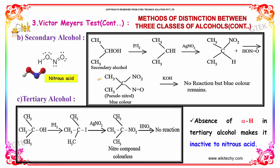For secondary alcohols, if a secondary alcohol is reacted with iodine we obtain CH3CH2CHI. On further addition of AgNO2 we obtain CH3CH2CHNO2. When nitrous acid is added, we obtain pseudonitrol, which is a blue color solution. On further addition of potassium hydroxide there is no change, but the blue color still remains.